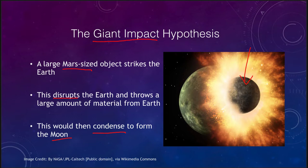This large impact explains a couple of things. First of all, it would explain why the Earth is the only object in the inner solar system with a large moon, because it just happened to be the one that had the impact that struck it just right. The impact had to strike just right — if it was a little bit off, the object would miss the Earth altogether or maybe just glance off. And if it was a direct head-on collision, they may have just coalesced together.